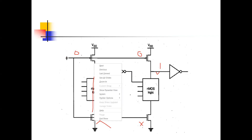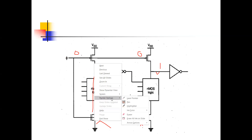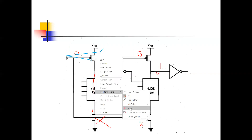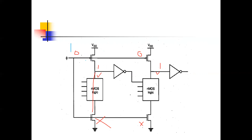Now what happens when phi equals 1? That is called the evaluation phase. For phi equals 1, the PMOS transistor is OFF and the bottom NMOS transistor is ON. Now this precharged output of 1 can become 0 if all the inputs are 1, because the lower path is already present. If the intermediate NMOS path is also established, then the output will discharge to 0.